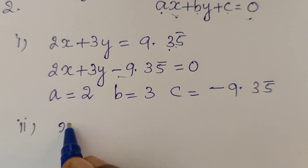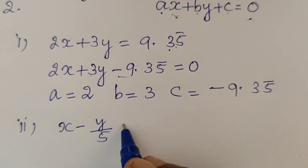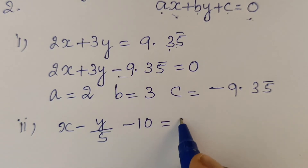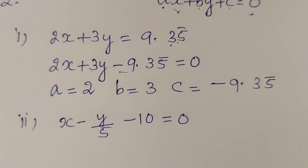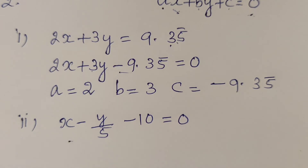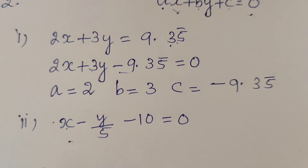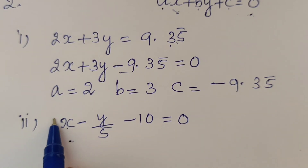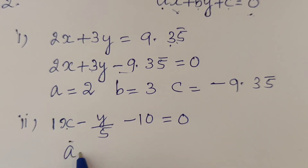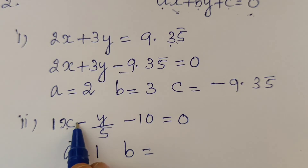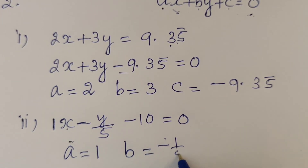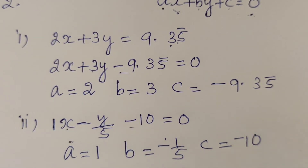Part (ii): x minus y divided by 5 minus 10 equal to 0. This is already in standard form. So we can directly write the values: a is equal to 1, b is equal to negative one-fifth, and c is equal to negative 10.